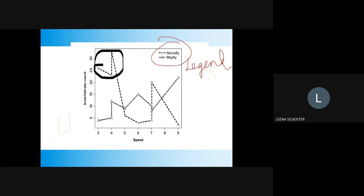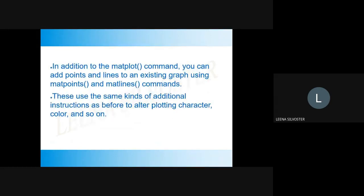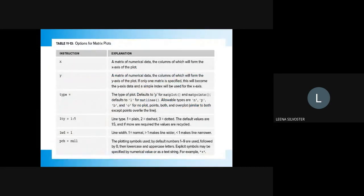In the plot output, xlabel (e.g., Speed) and ylabel are labeled, and the title is displayed at the top. Dot characters are used for plotting. Plotting functions are the same, so for using legend you can copy the relevant code. In addition to the matplot() command, you can add points and lines to an existing graph using matpoints() and matlines(). Some options for a matrix plot can be read from the documentation.